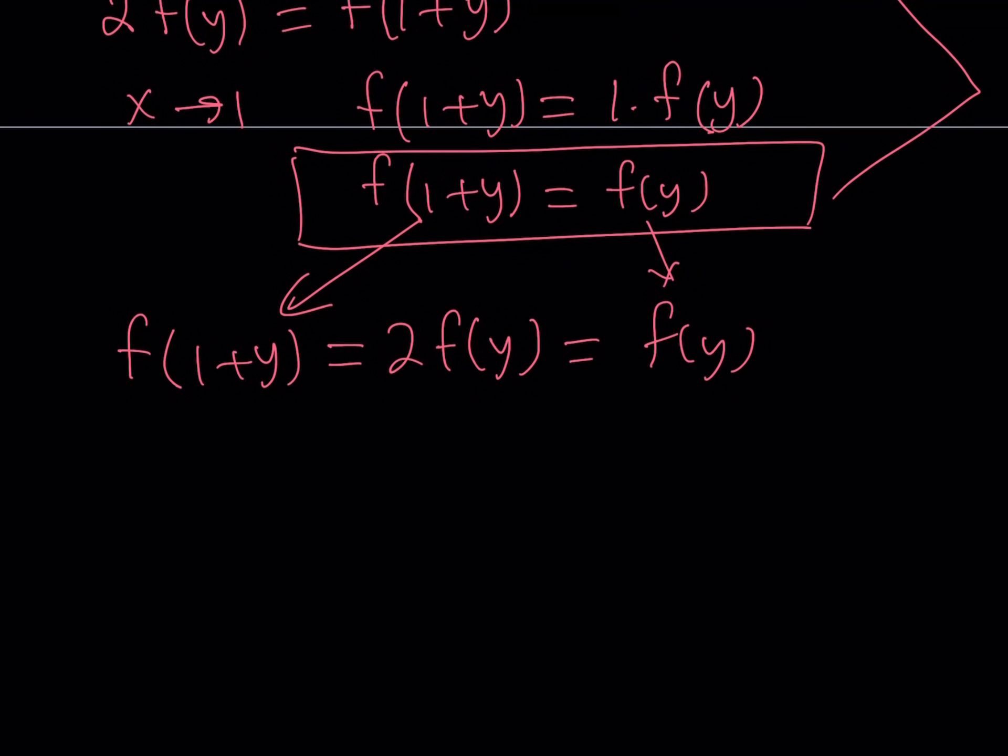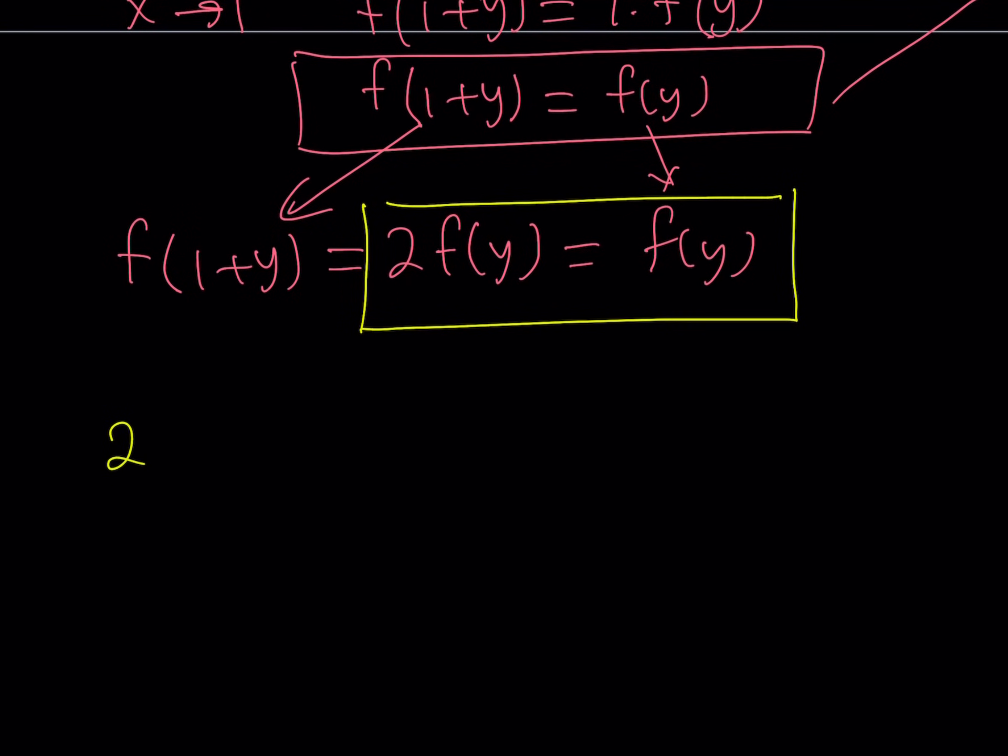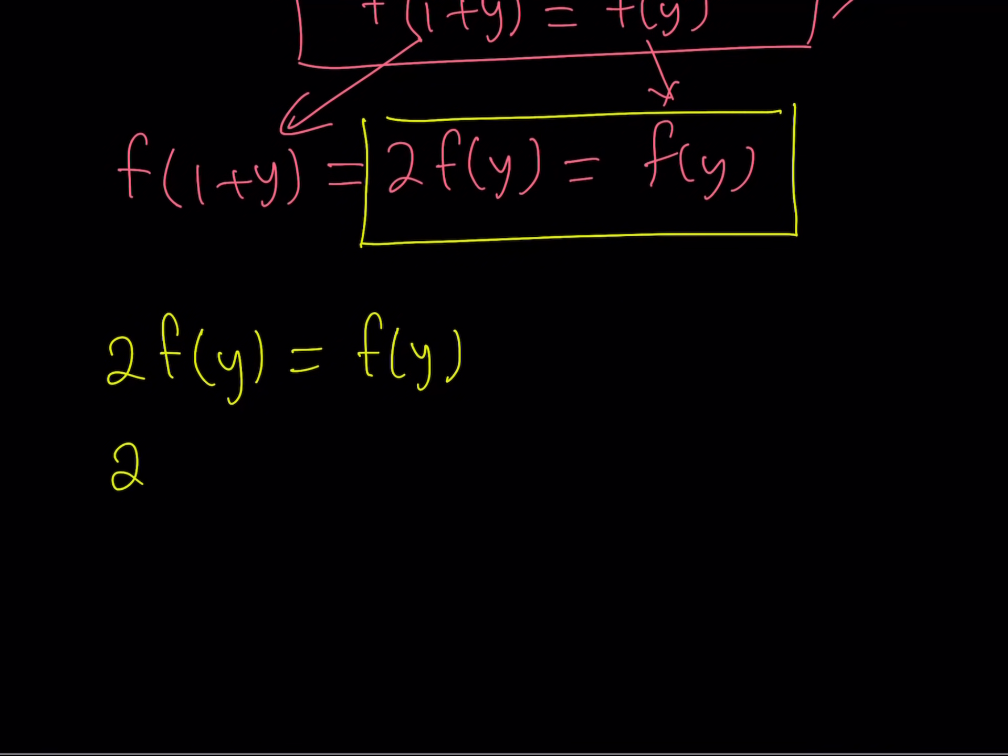Now what does this tell you? If you kind of focus on this part, you get something very, very helpful. So, we get 2 f of y equals f of y here. How can a number multiply by 2 equal the number itself? Is that possible? It is when that number is 0. But how do you find that out? You are supposed to subtract f of y from both sides.